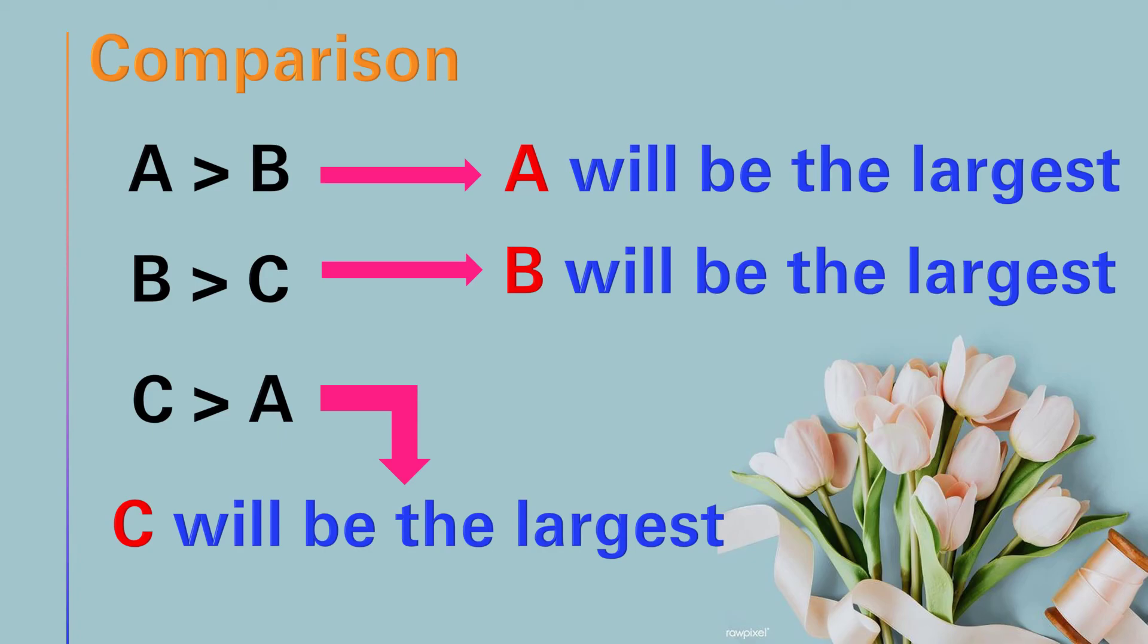So now let's draw the flowchart like this. Again, I will start with the start symbol. Now I have given the input as input A, B, C.